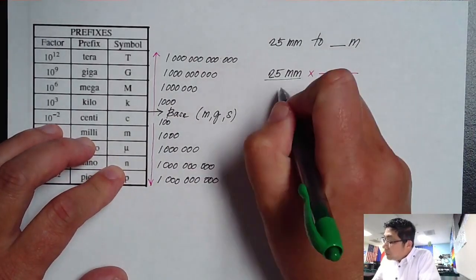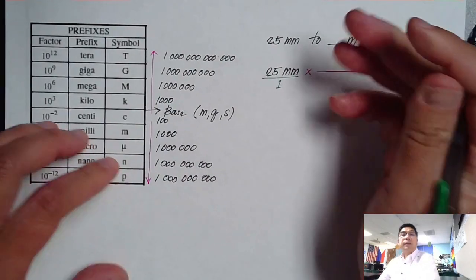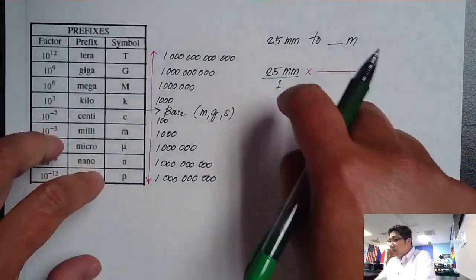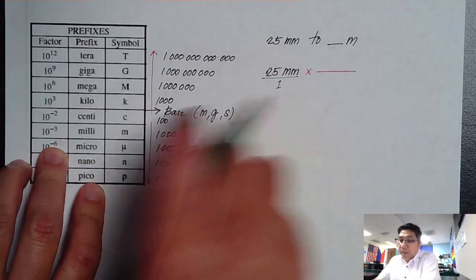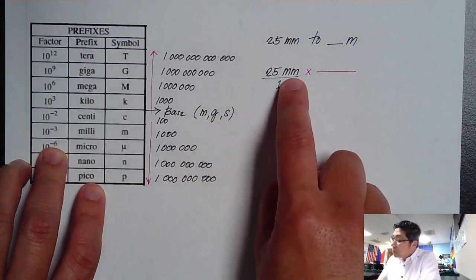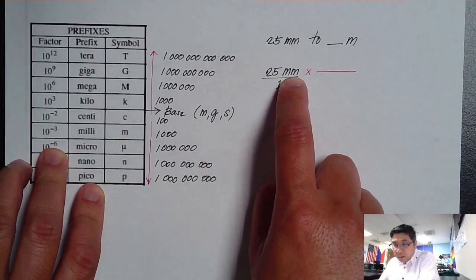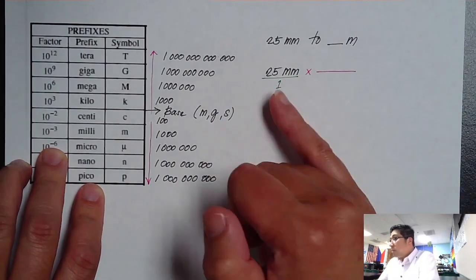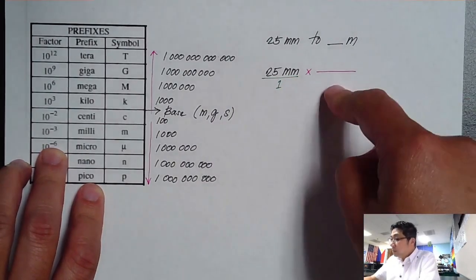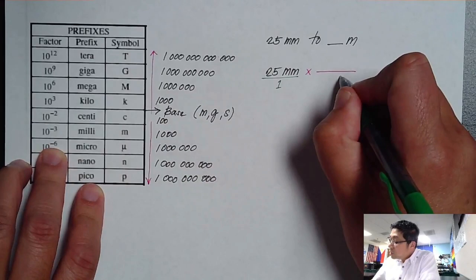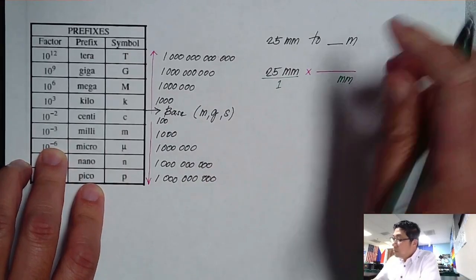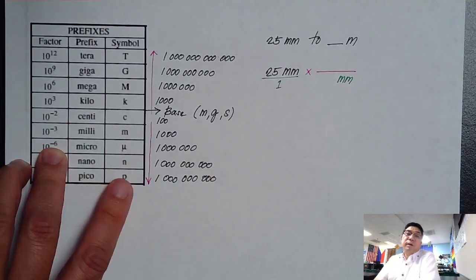So if you don't see any divisor, if you don't see any denominator in your number, it's always divided by one. So now I want to cancel my millimeter. Will I put my millimeter at the bottom or at the top? For sure, I have to place my millimeter at the bottom because you need to place it at the opposite location of the bar.